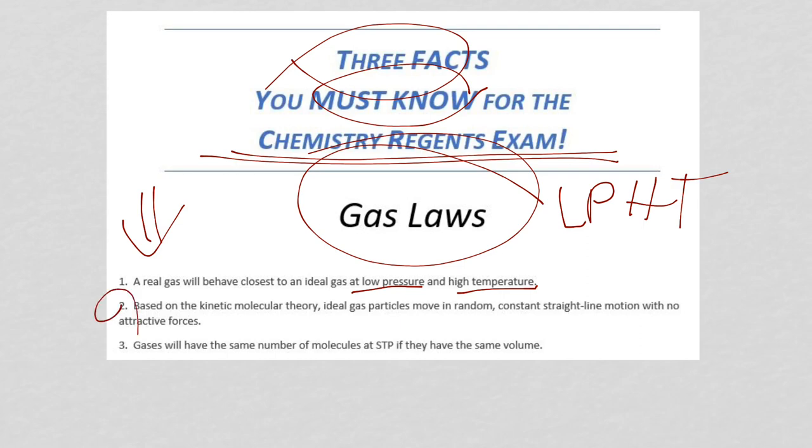The second one. Kinetic molecular theory. Kinetic molecular theory allows us to use any gas as an ideal gas, even though we know ideal gases don't exist. We say that ideal gases move in random, constant, straight-line motion with no attractive forces.